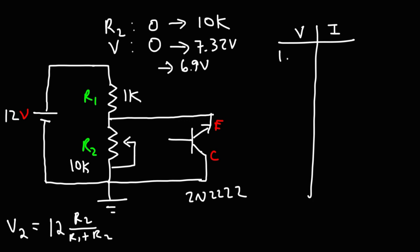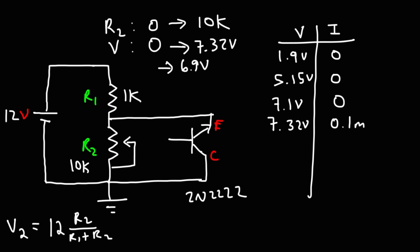I took my first measurement of current at a voltage of 1.9 volts — the current was 0 milliamps. The next measurement at 5.15 volts was still 0. At 7.1 volts, the current was still 0. But at 7.32 volts, the current was 0.1 milliamps. So somewhere around 7.3 volts the transistor began to conduct in the reverse direction — that is, with current flowing from the emitter to the collector, as opposed to from the collector to the emitter.